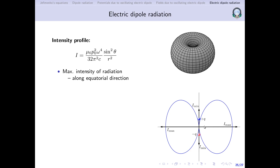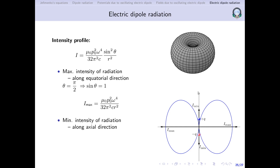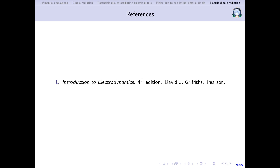At θ = π/2, sin θ = 1, so Imax = μ₀p₀²ω⁴ / (32π²c r²). At θ = 0 or π, sin θ = 0, so intensity is zero along the dipole axis. This means if you look at the oscillating dipole along its axis, no radiation reaches you; if you look from the equatorial direction, you receive maximum intensity. This is the signature of electric dipole radiation.